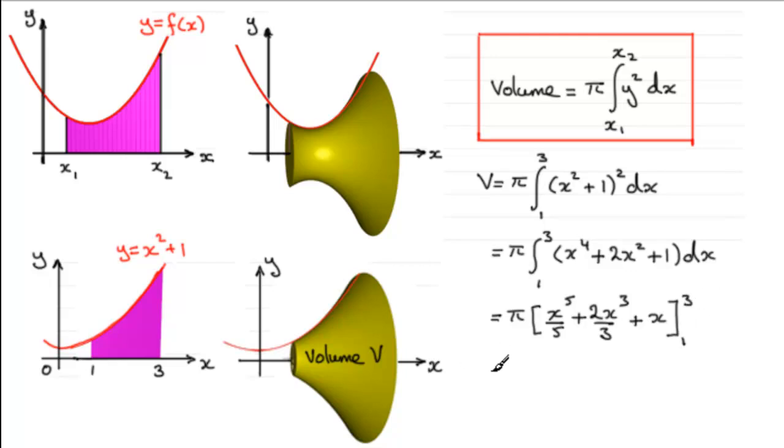And if we substitute our limits in, we've got, for the first one, when we put the 3 through, we've got 3 to the power 5 divided by 5. And then plus 2 times 3 cubed, all over 3. And then plus 3.